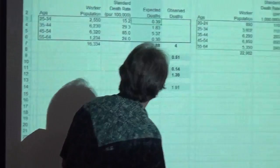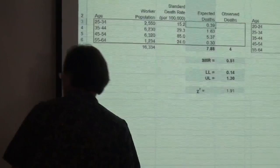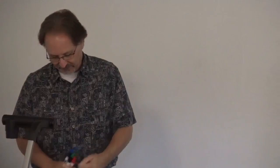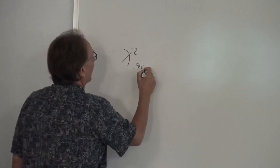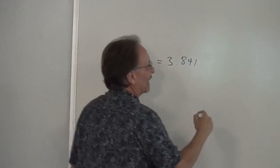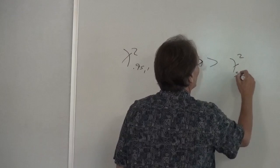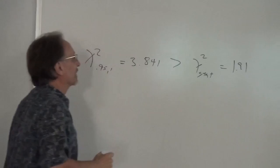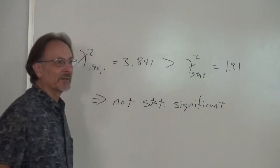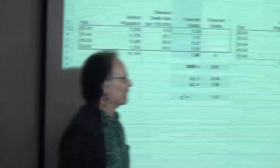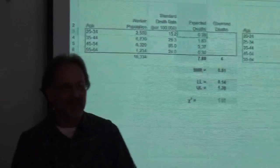That's where the 3.84 comes from. Therefore this is not statistically significant because it's not greater than 3.84. The way you would write this is: chi-squared 0.95 with one degree of freedom equals 3.84, and that is greater than the chi-squared statistic of 1.91. Therefore it is not statistically significant. So this is not a statistically significantly healthier population, even though it looks like it — expected deaths are twice what they actually observed, but it's not significant. Despite appearances, they're no better, no worse than the standard population.